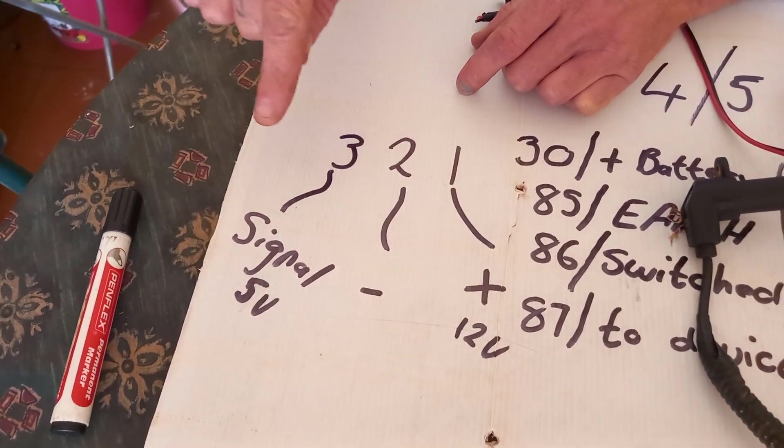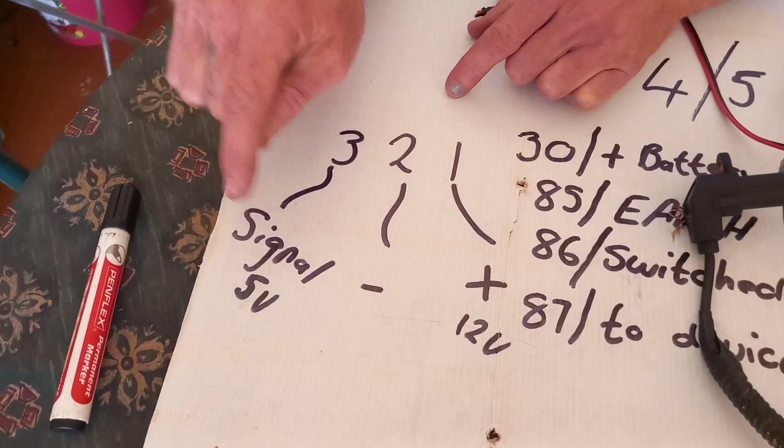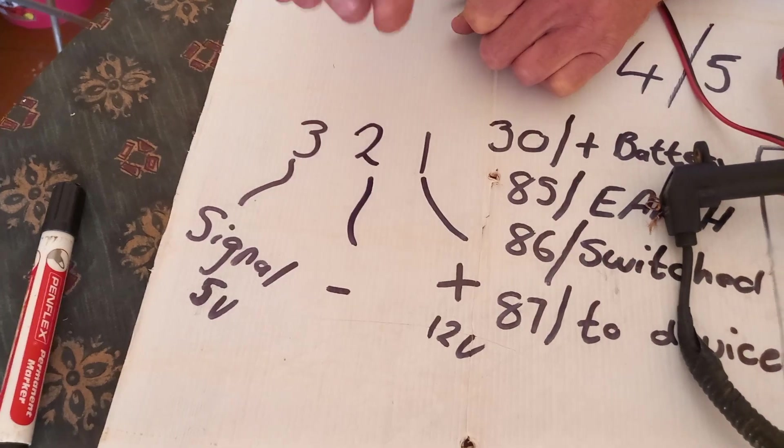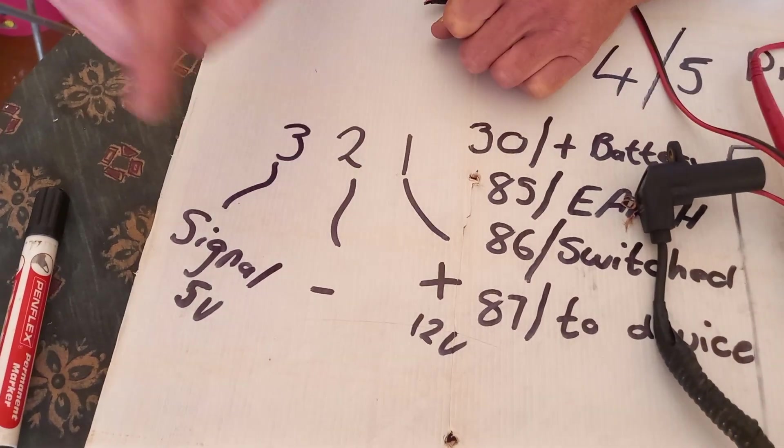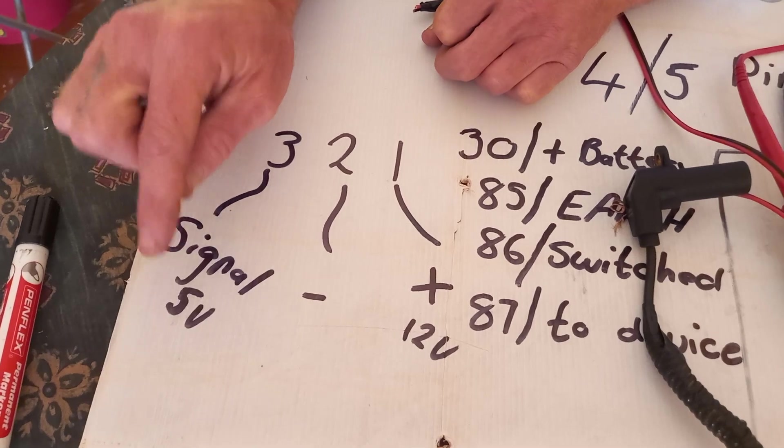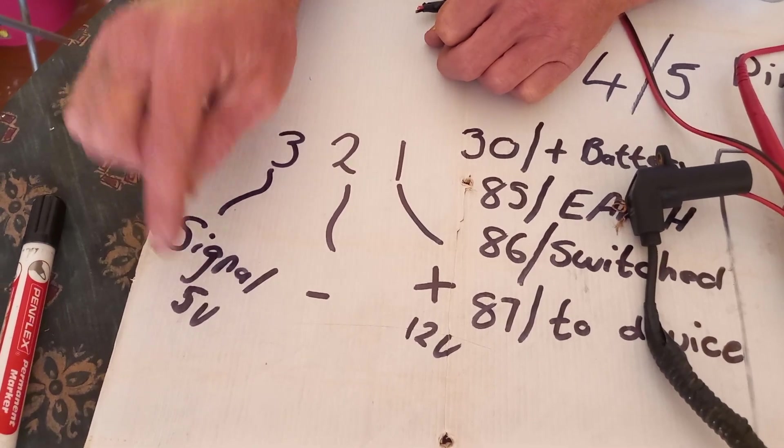And you're going to have number three which is your signal wire. That's also a way to test it. You just move it on to number three, any one of the probes, and you're going to get signal wire that's going to give you a measurement of only five volts.